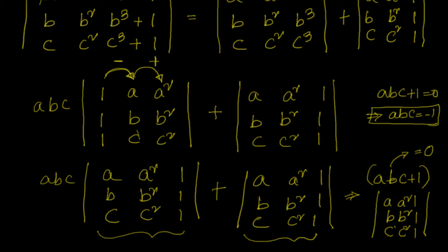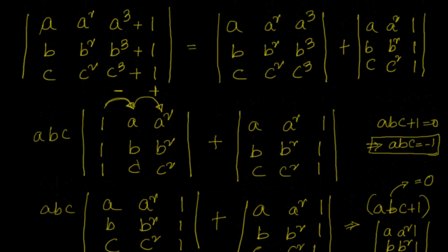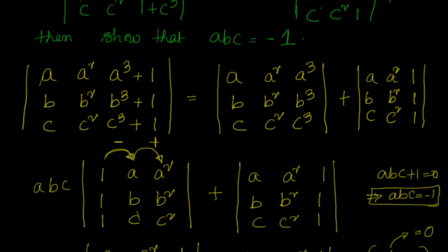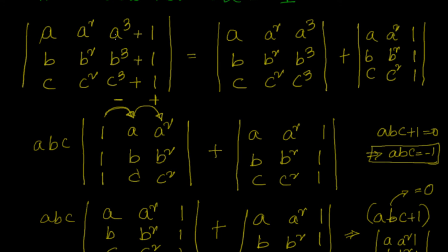We have leveraged a couple of determinant properties in solving this problem. First: if in a particular column the values are the sum of two different expressions, you can distribute and write the determinant as the sum of two determinants — all other elements remain as-is. That's the first property.